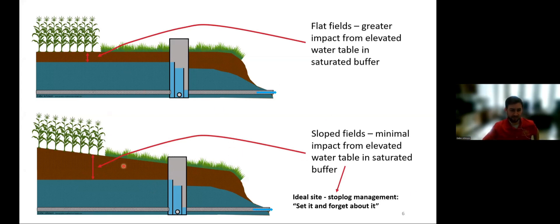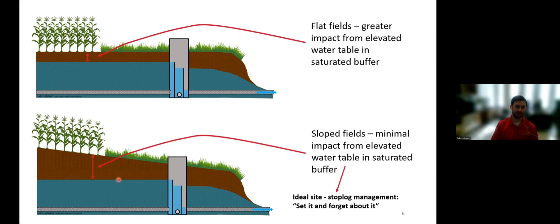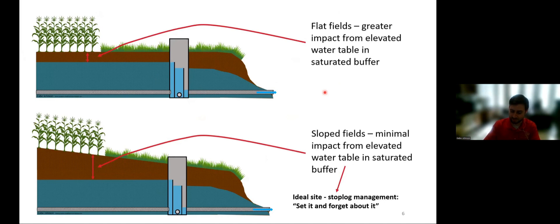When we're looking at siting saturated buffers, the sloped site is really more of an ideal site because we don't have to worry about those impacts to crops. One phrase we like to use is: let's find a site where we can just set those stop logs and forget about it. We don't have to worry about managing them, because that's an additional labor task for the farmer. But we know there are sites out there where it's flatter that would otherwise be a good site for a saturated buffer, and that's where this study comes into play.